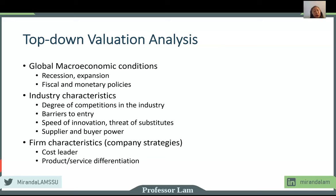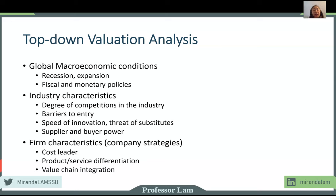Or rather than being the cost leader, the firm may want to create products that are different. Product and service differentiation is a strategy that oftentimes will enable a company to charge a higher price for its products and services. We'll be able to see that through the profit margin from the financial statement. A firm that pursues a product and service differentiation strategy we expect to have a higher profit margin compared to a cost leader. And then finally, we look at value chain integration — what is the value chain and how does the firm position itself inside it.